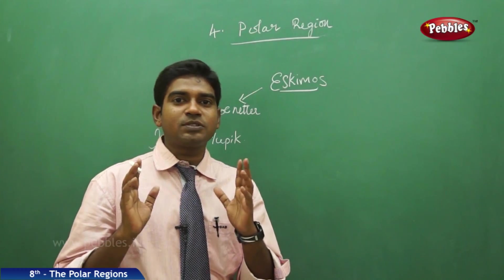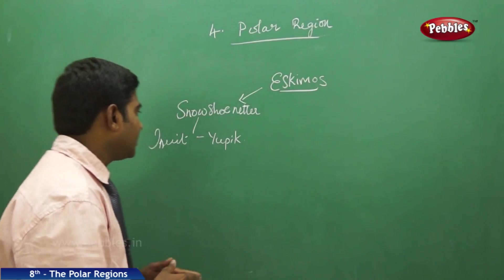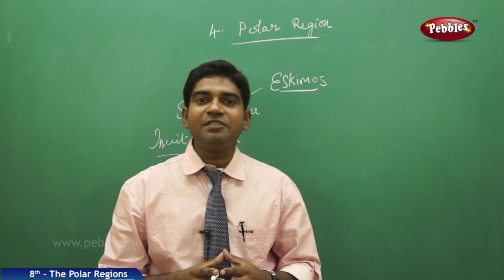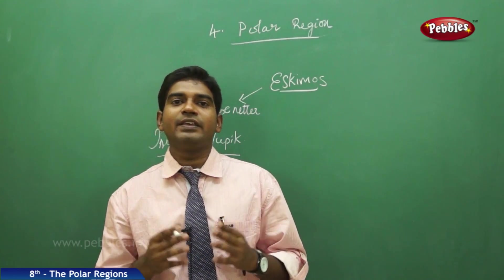We have two groups in the Eskimos, one is the Inuit group, the other one is the Yupik group. These two are the main divisions of people who live in the Eskimos.